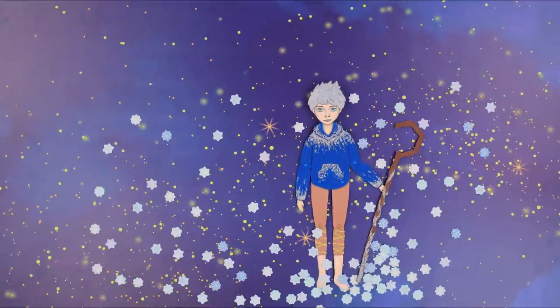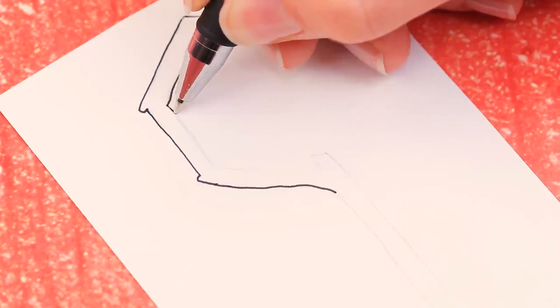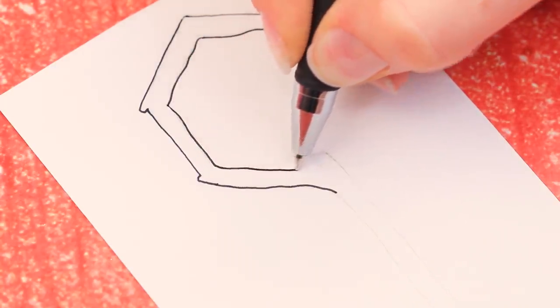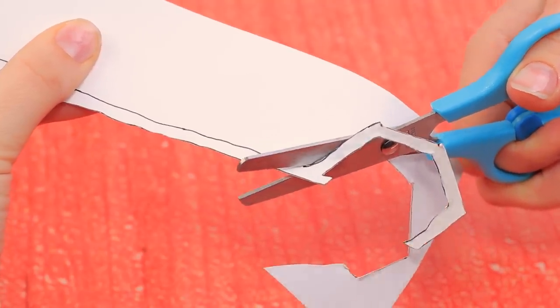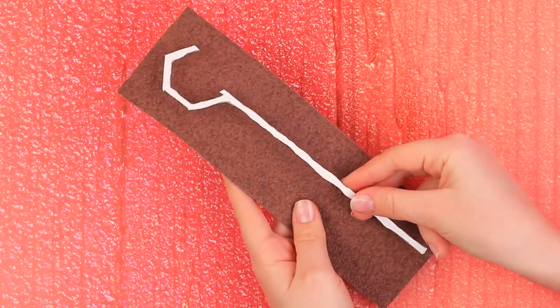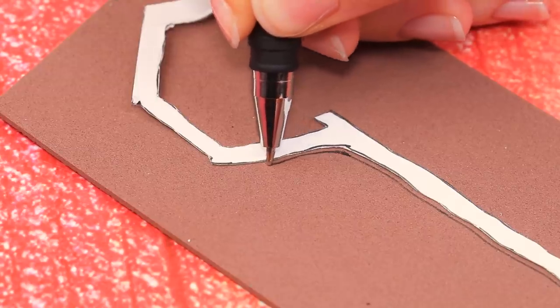And Jack will need his magic stick! Draw an outline on white cardboard. Trace with a black pen and carefully cut it out. Take a sheet of textured brown foam paper so it looks like wood and trace the stick on it.